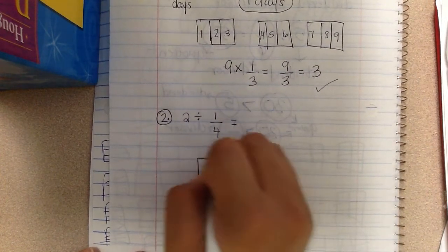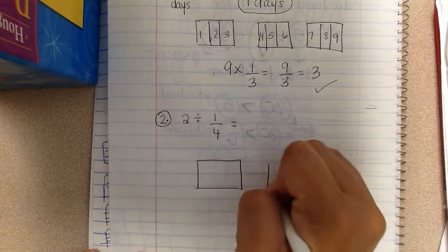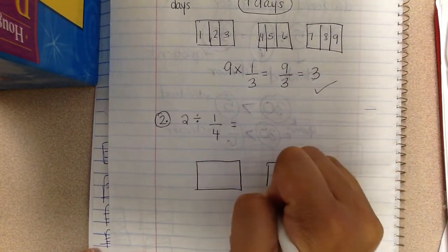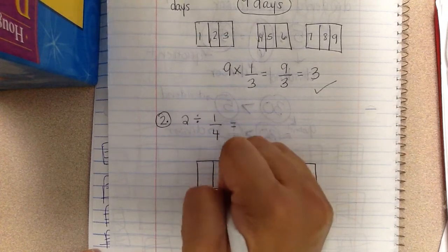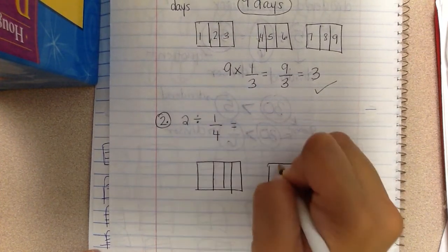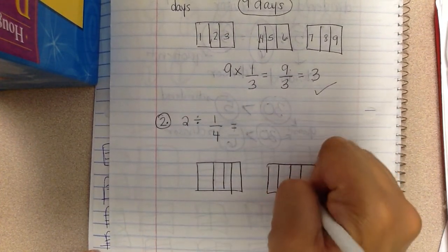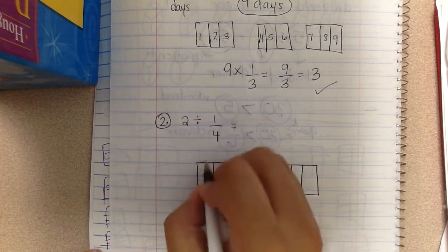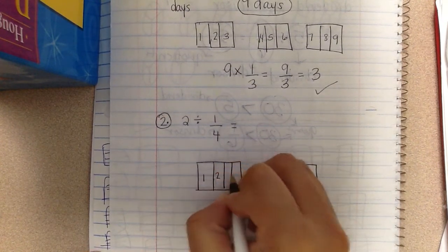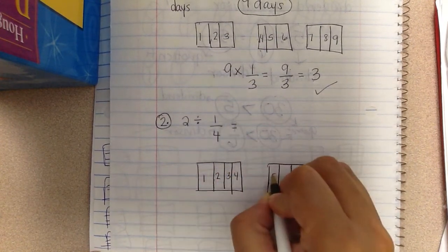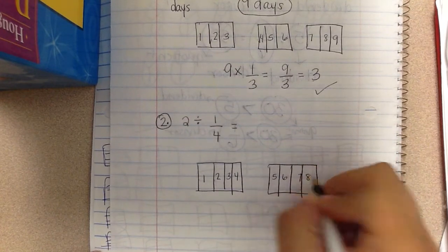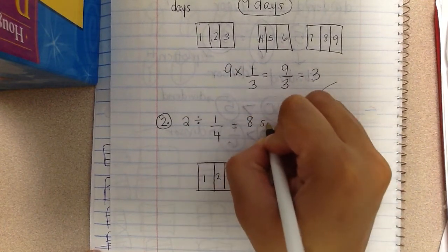So again, I'm going to draw two wholes. And I'm going to put four sections in each whole. I'm going to count how many fourths I have. One, two, three, four, five, six, seven, eight. So that means she needs eight scoops.